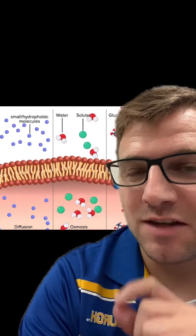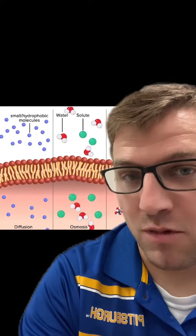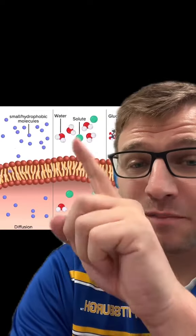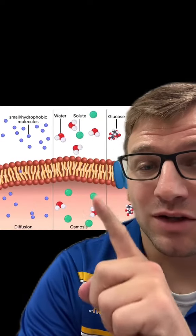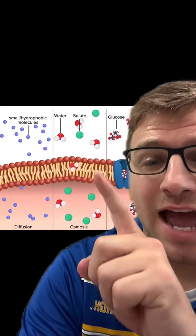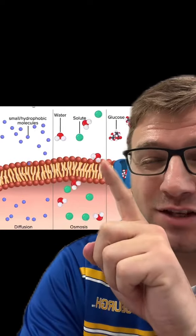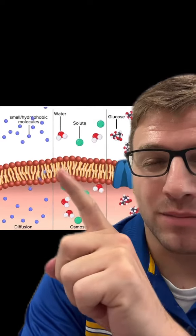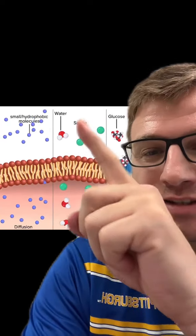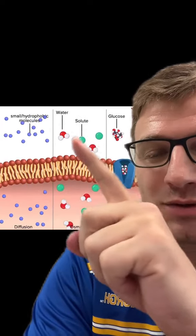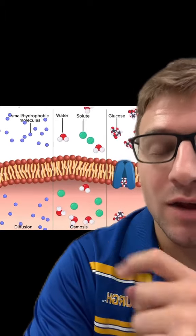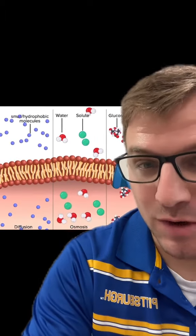Osmosis is specifically the movement of water molecules. This, again, occurs from areas of high to low concentration. However, in this case, the solute molecules won't pass this membrane. So as you can see, the water molecules up here travel to inside the cell because of osmosis.